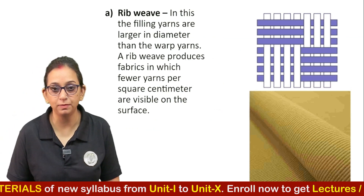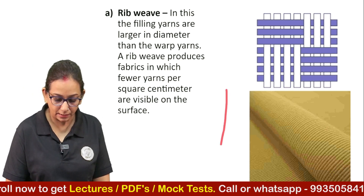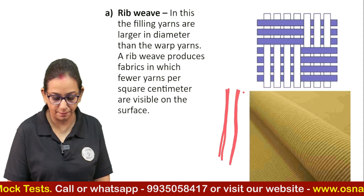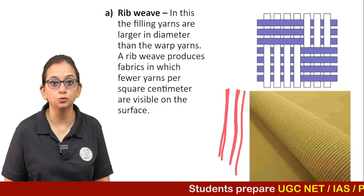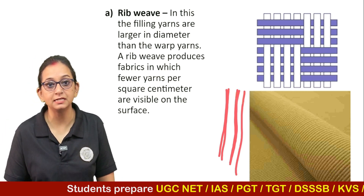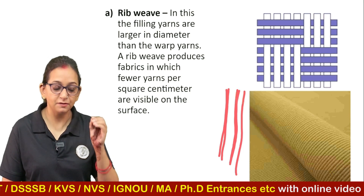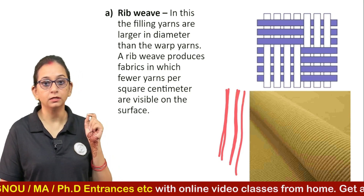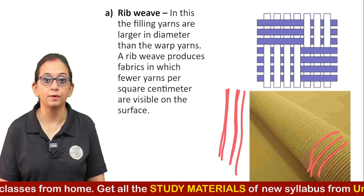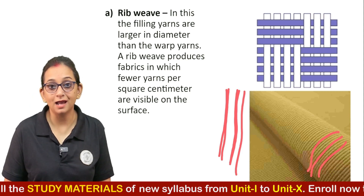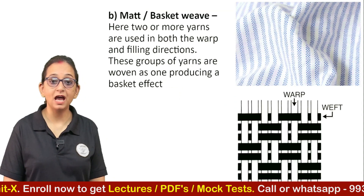There are two variations of plain weaves. The first is the rib weave, in which a rib is formed between the two weaves — a kind of rib that is projected upwards. The filling yarns are larger in diameter than the warp yarns. A rib or warp rib weave produces fabrics in which fewer yarns per centimeter are visible on the surface.